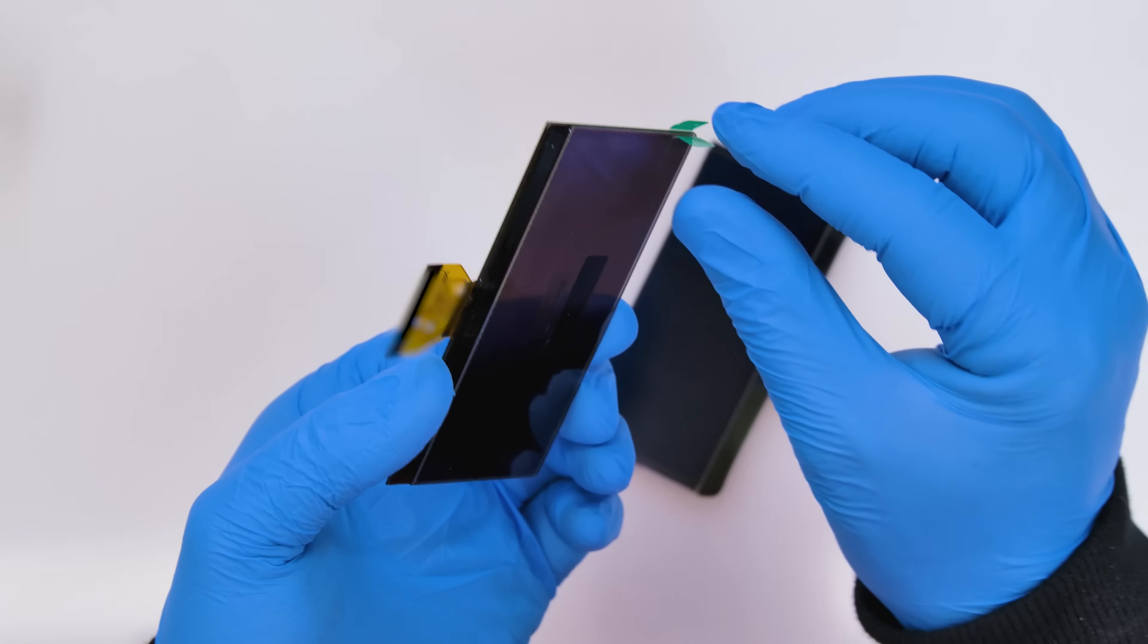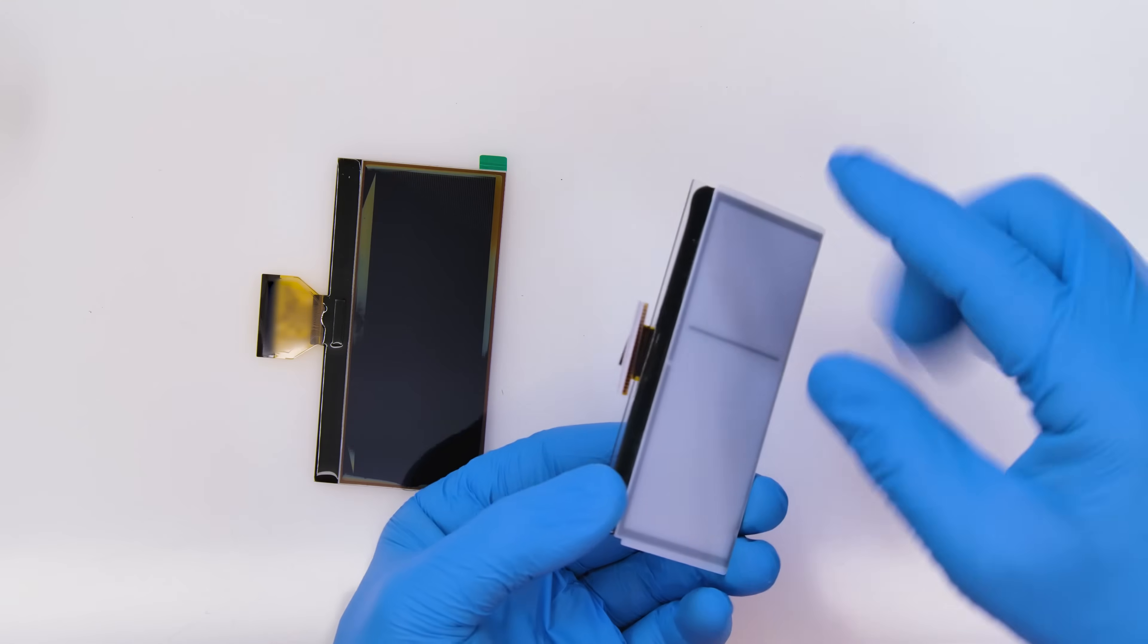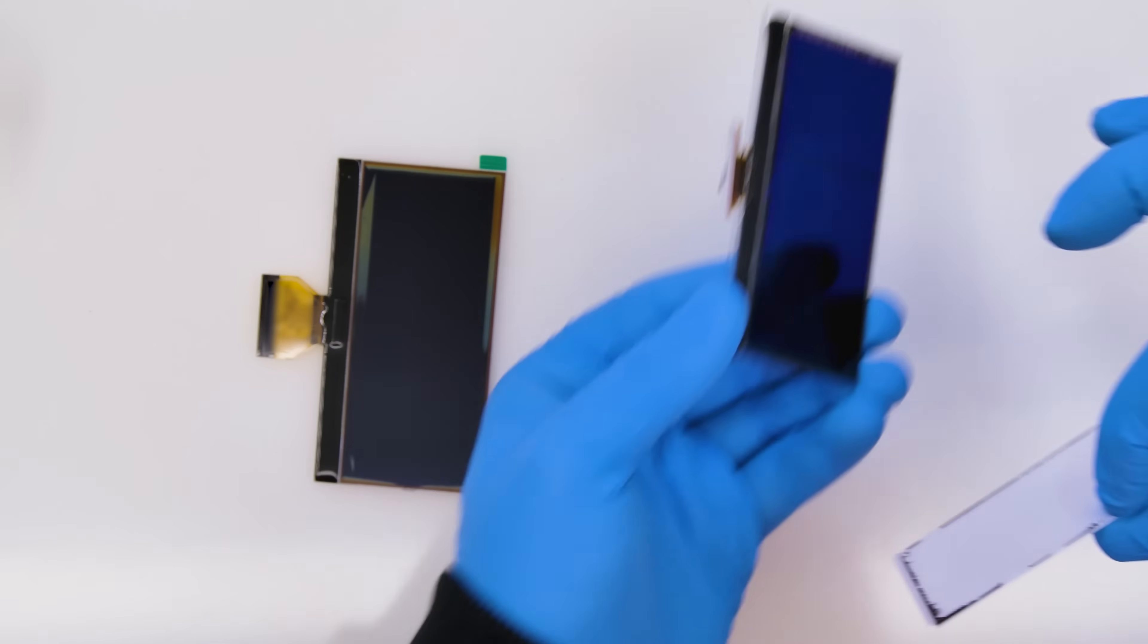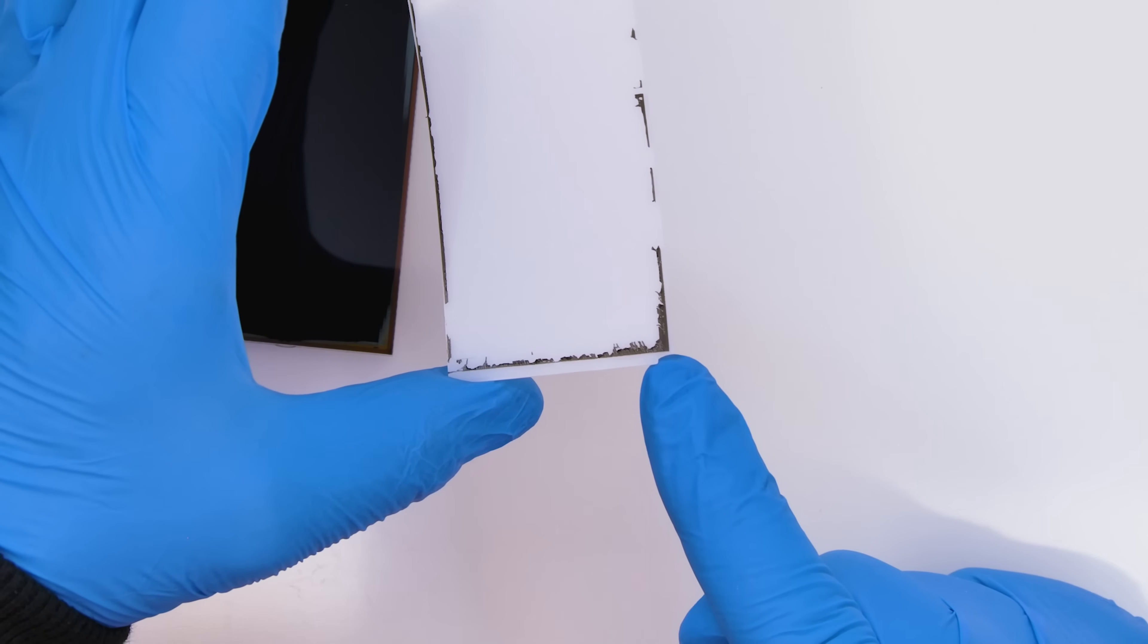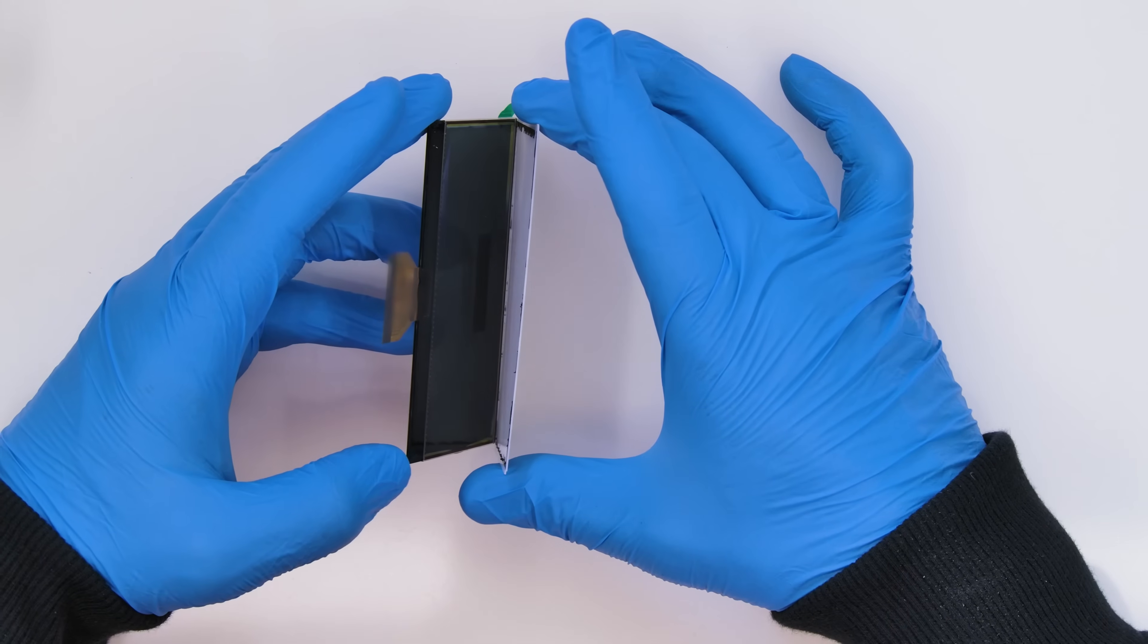Peel off the rear protective film from the Minitool's display. Detach the backlight diffuser from the faulty display and, taking the notched corner as a reference, attach it the same way on the rear part of the new display.